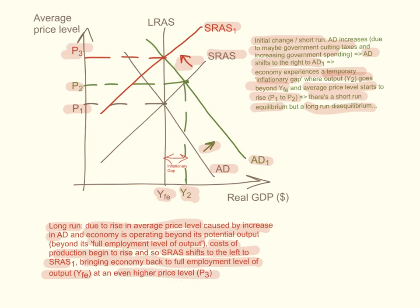Initially there is an inflationary gap — the gap between the full employment level of output and the actual output. This puts the economy in long-run disequilibrium, causing the average price level to rise, which means costs of production rise, and eventually short-run aggregate supply shifts to the left, bringing the economy to a new long-run equilibrium at the intersection of the three curves.